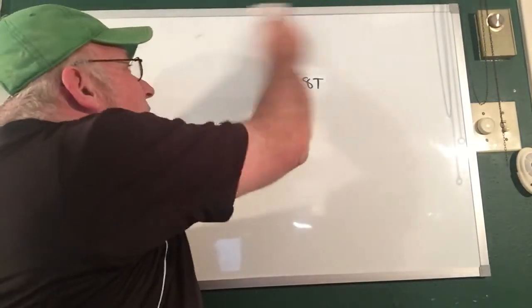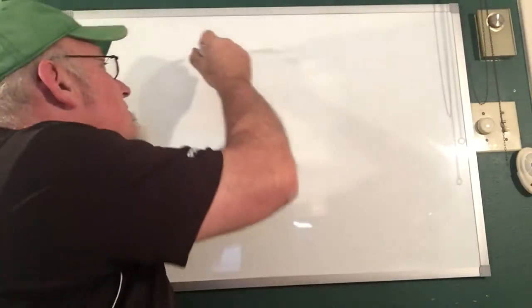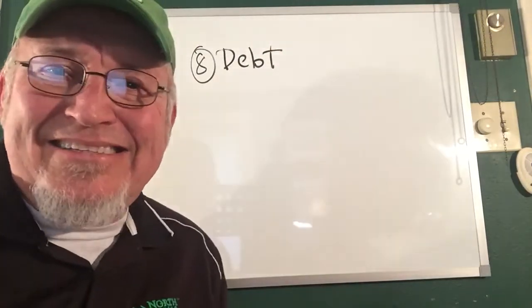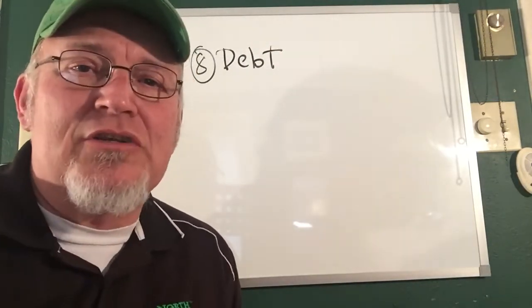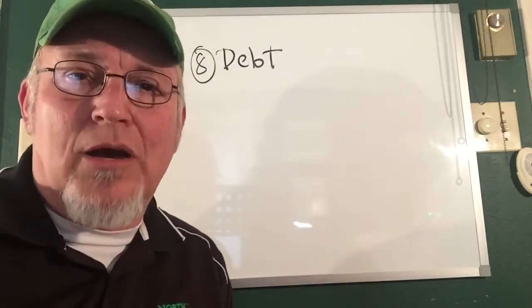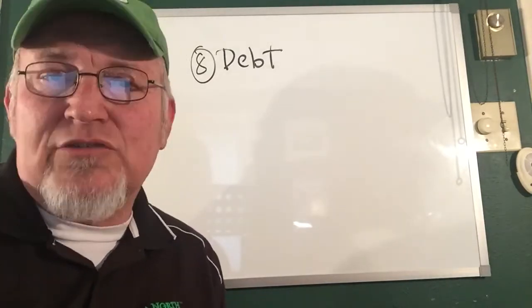Number eight: how is a deficit different than a debt? Debt is just the accumulation of all those deficits. So debt is a gross number and you take all those annual deficits and add them all together and that's what your debt is.